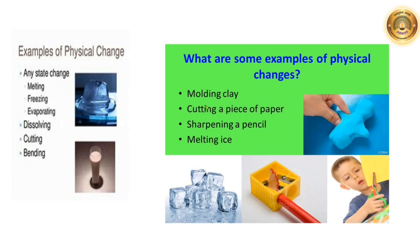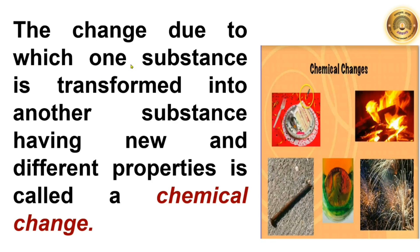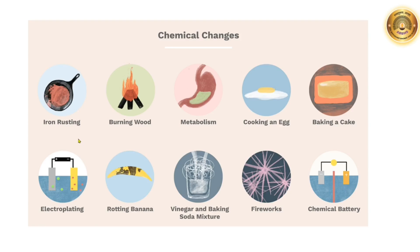Similarly, molding clay, cutting a paper, sharpening a pencil, melting of ice, are also examples of physical changes. The change due to which one substance is transformed into another substance having new and different properties is called a chemical change. These are some examples of chemical changes: the rusting of iron, burning of wood, the metabolic activities that take place in our body, cooking an egg, baking a cake, are all examples of chemical changes.